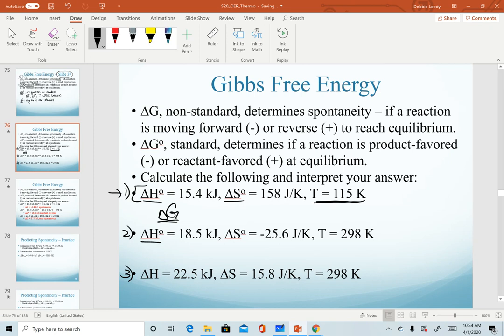For our second example, we have standard enthalpy, standard entropy, and our temperature is standard. This means that we are calculating delta G naught, the standard value for Gibbs free energy.